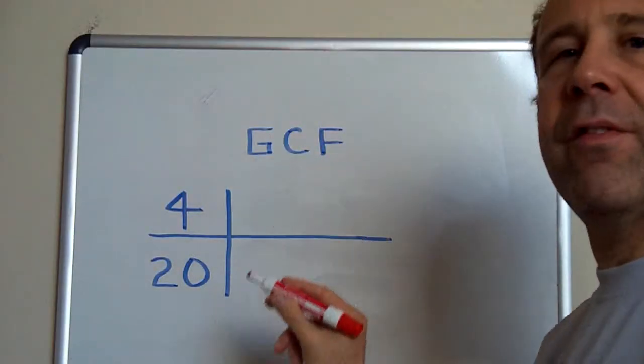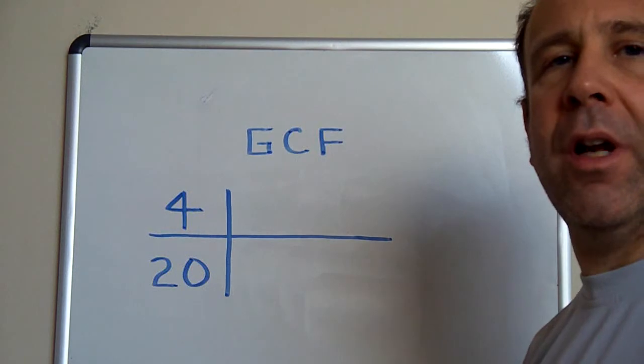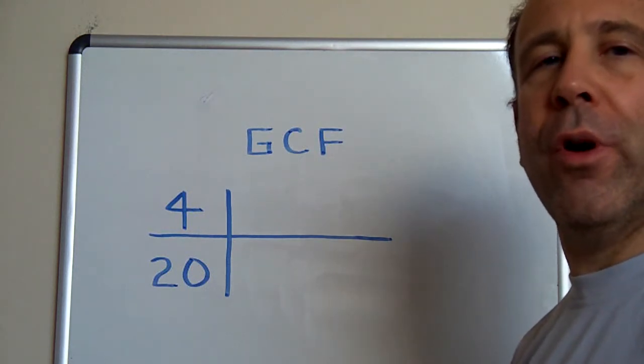The GCF, or greatest common factor, is the highest number that divides exactly into two or more numbers.